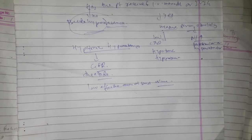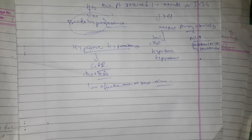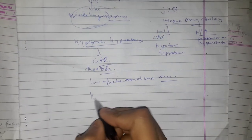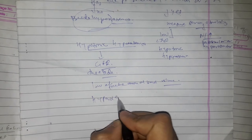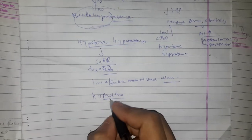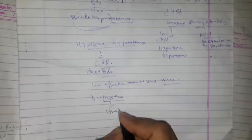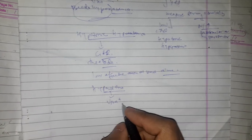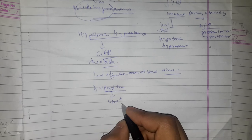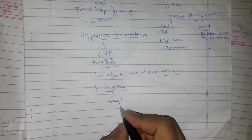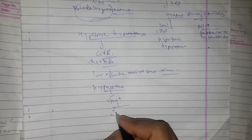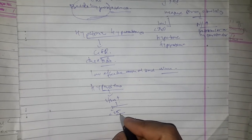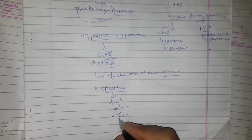If there is no edema, check for signs of hypovolemia such as low blood pressure or postural hypotension. If signs of hypovolemia are present, measure urine sodium. If urine sodium is less than 25 milliequivalents per liter, it is hypovolemic hyponatremia.